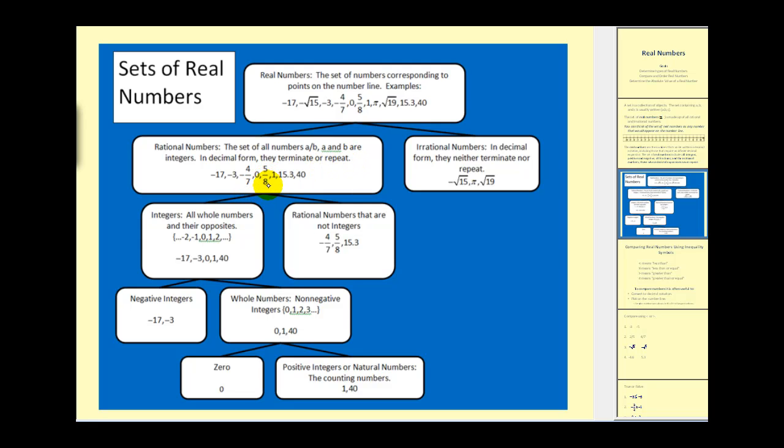So for example, five-eighths is 0.625, it terminates. And if we considered a number like one-third in decimal form, this would be 0.333 repeating. So it would also be a rational number.